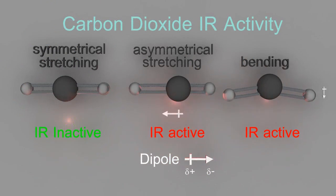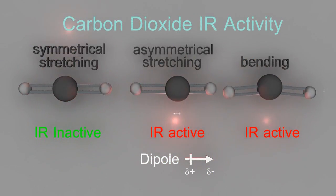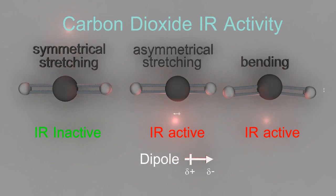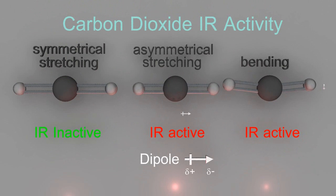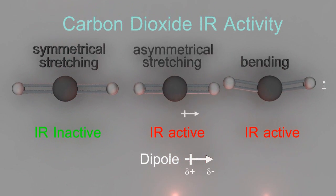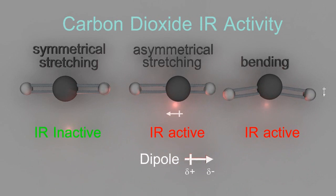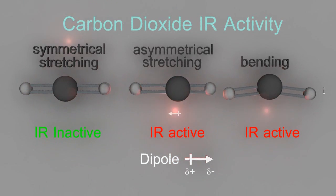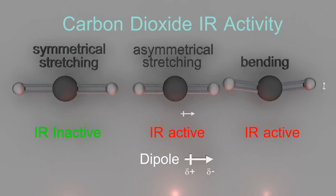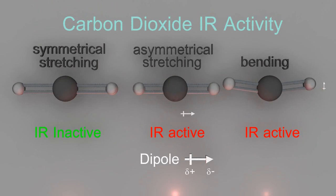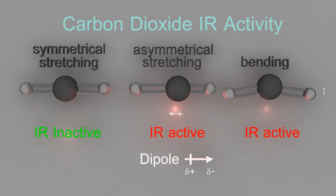Part of me wished I spent 10,000 hours learning to play the guitar instead of learning computer animation, but anyway — here we go. Carbon dioxide infrared, or IR, activity. You need to learn these three stretching and bending motions that the carbon dioxide molecule can do, if the molecule just happens to be making one of these motions as it's hit by an infrared photon.